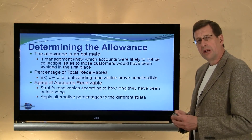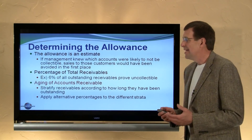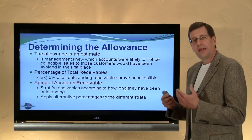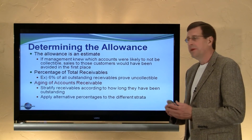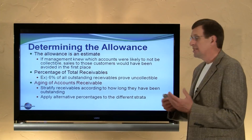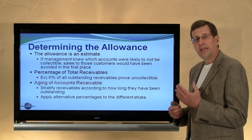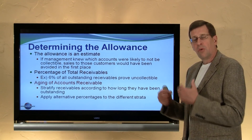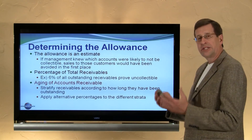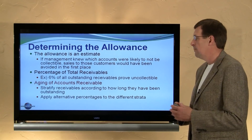So now it's time to look closer at these allowance methods. The allowance is an estimate of uncollectibles, and the allowance is necessary because if management knew which accounts were likely to prove uncollectible from the outset, sales to those customers would have likely been avoided to begin with. So we provide an overall or aggregate estimate against our entire outstanding receivables to determine the portion we think are uncollectible.